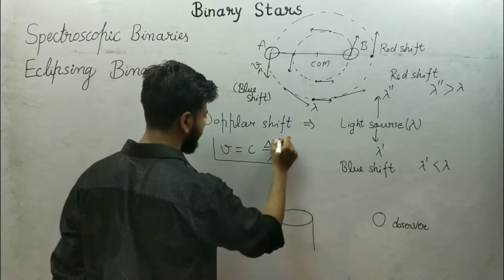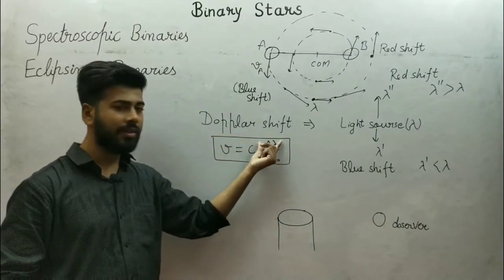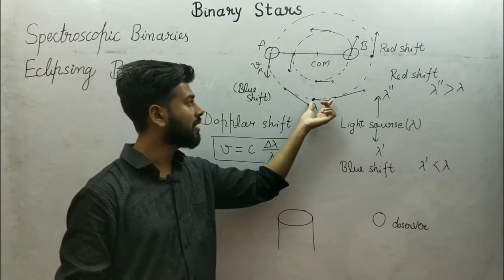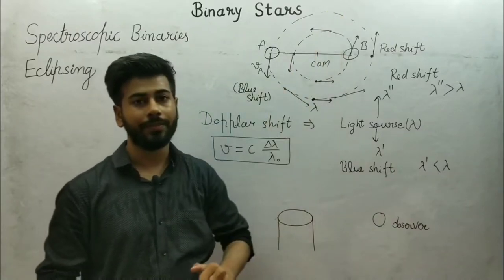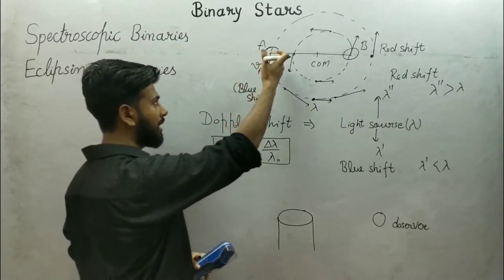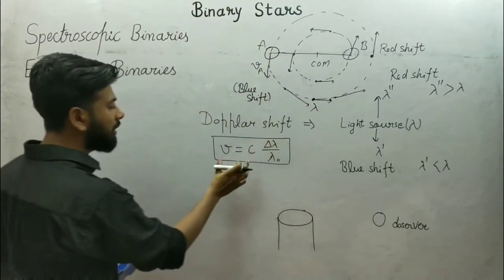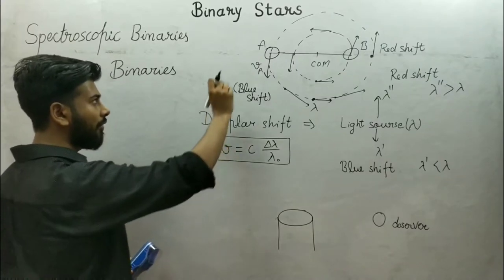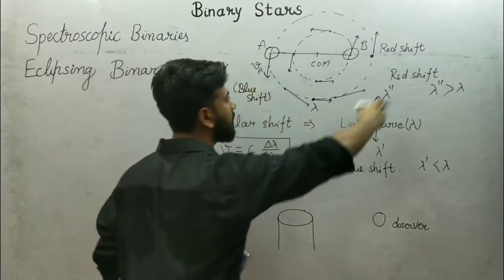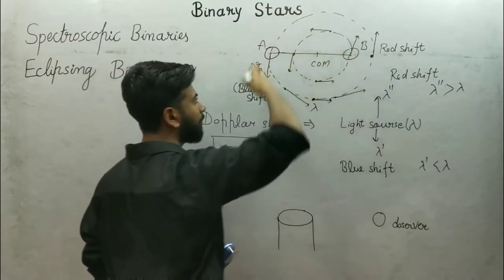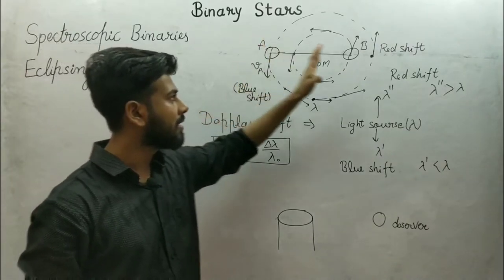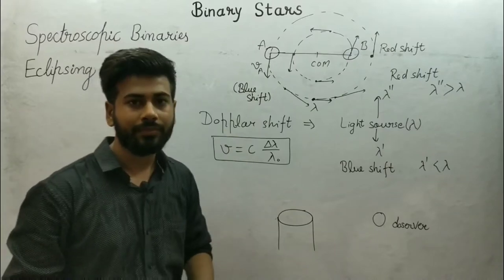The Doppler formula gives us delta-lambda over lambda-naught equals v over c, where delta-lambda is the change in wavelength and lambda-naught is the original wavelength — the wavelength when the star is at the perpendicular position. Using this relation we can find the velocity of the star. If we consider a circular orbit, the star will have the same velocity throughout its path, so we can find the velocity of star A and star B using the Doppler shift.